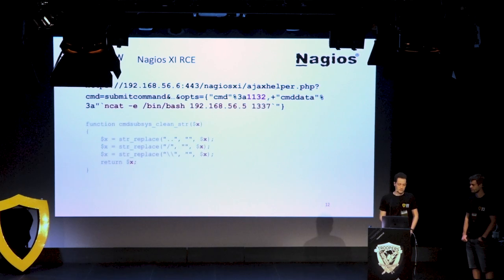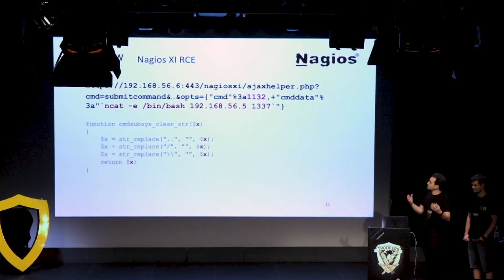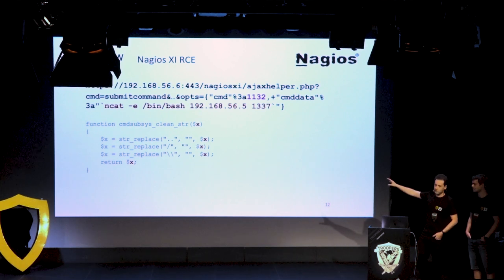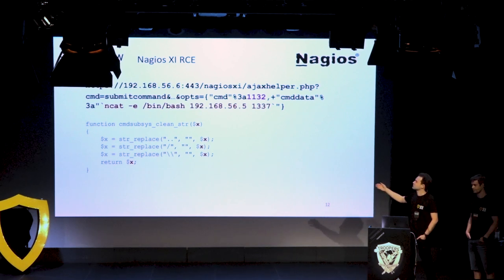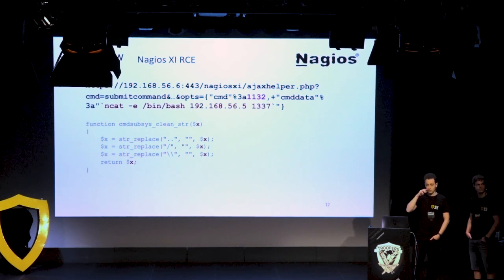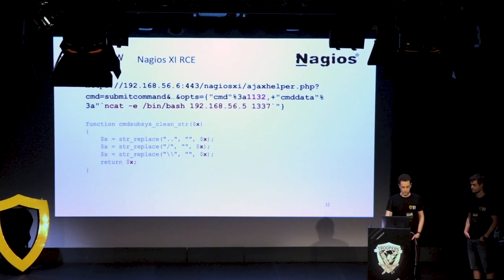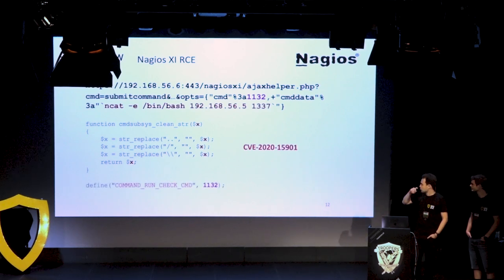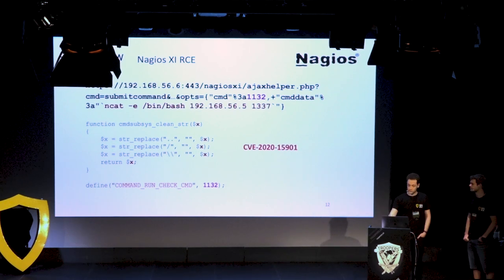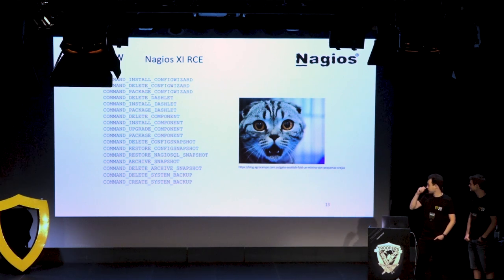What they did was filter user input, but the filtering function was not sufficient for PHP system calls — it was only for preventing path traversals. They didn't think about command injections, so that's how it slipped through. Command 1132 was the 'run check command,' and this was not the only command vulnerable to this issue — we found a list of commands all having the same problem.